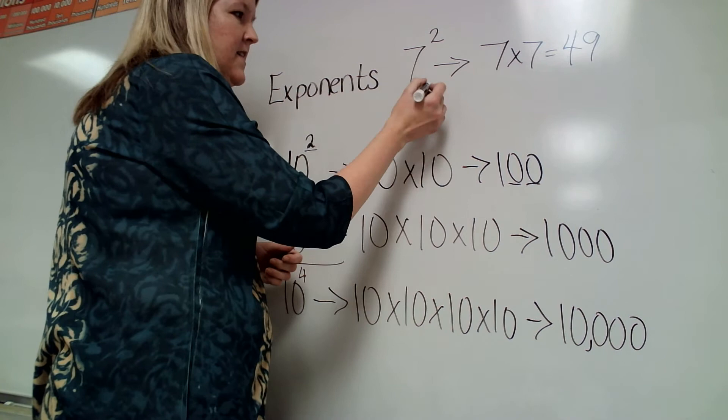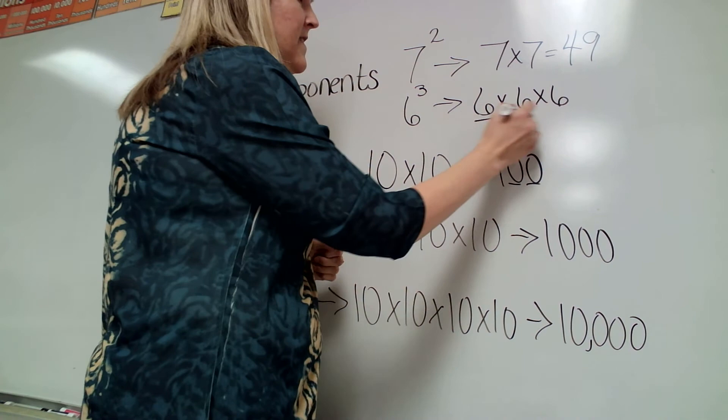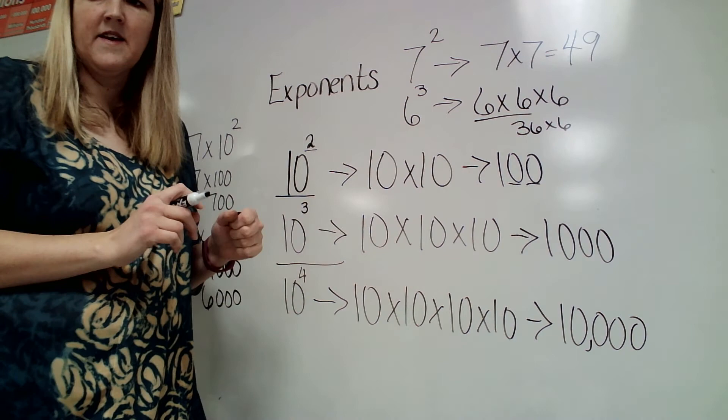And then you may have some that are not powers of 10, so you'd have 6 to the 3rd power. So that means 6 times 6 times 6, so it's not 6 times 3, it's 6 times 6 times 6. So 6 times 6 is 36. Then I have to multiply 36 times 6 to get my final answer.